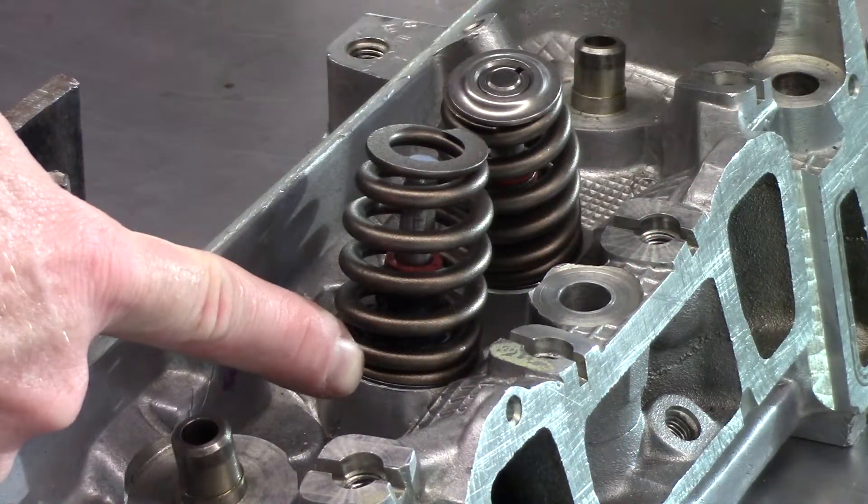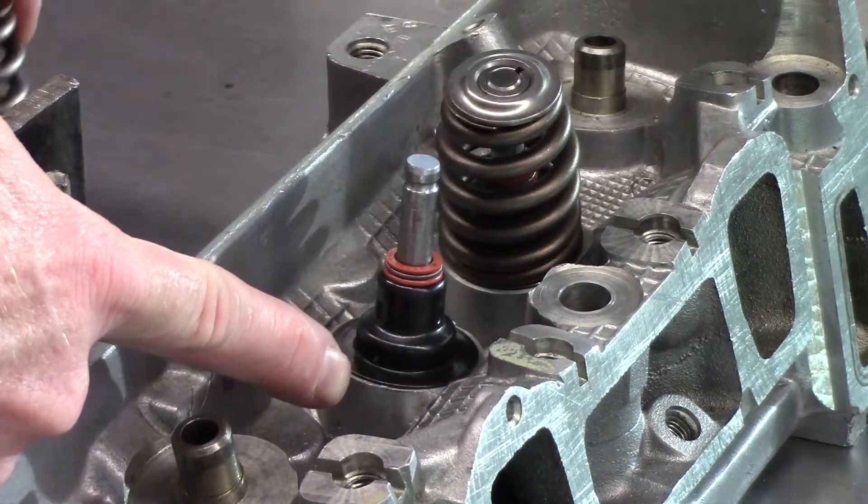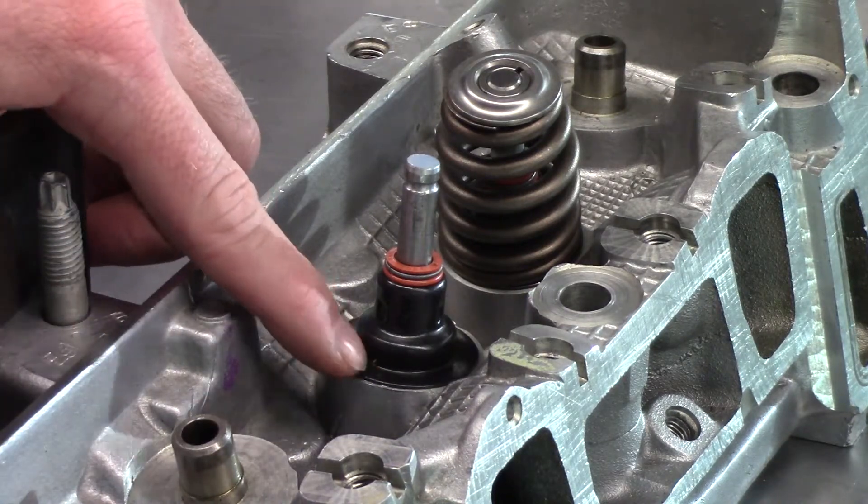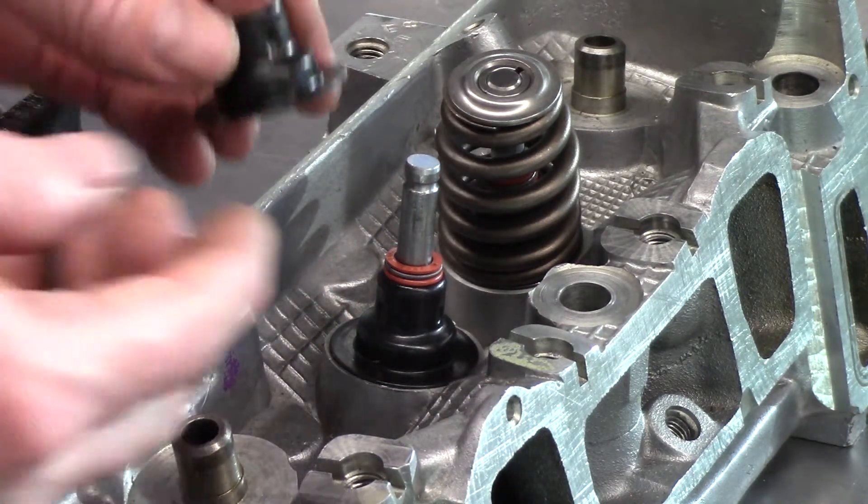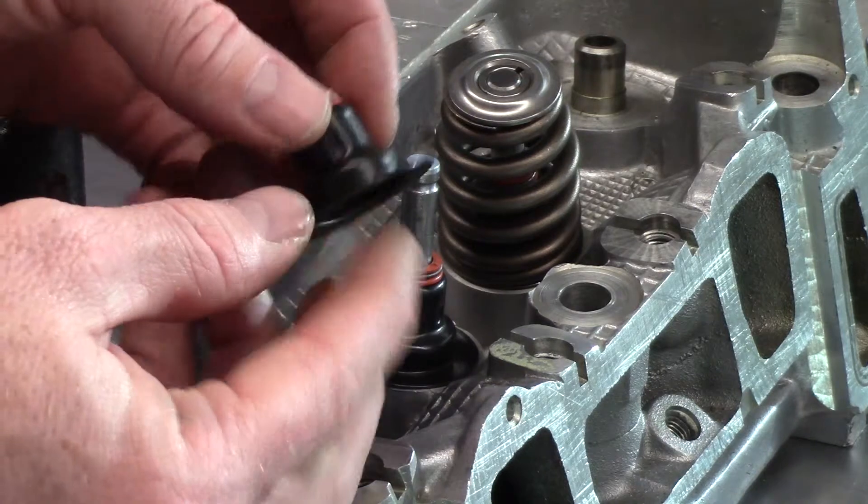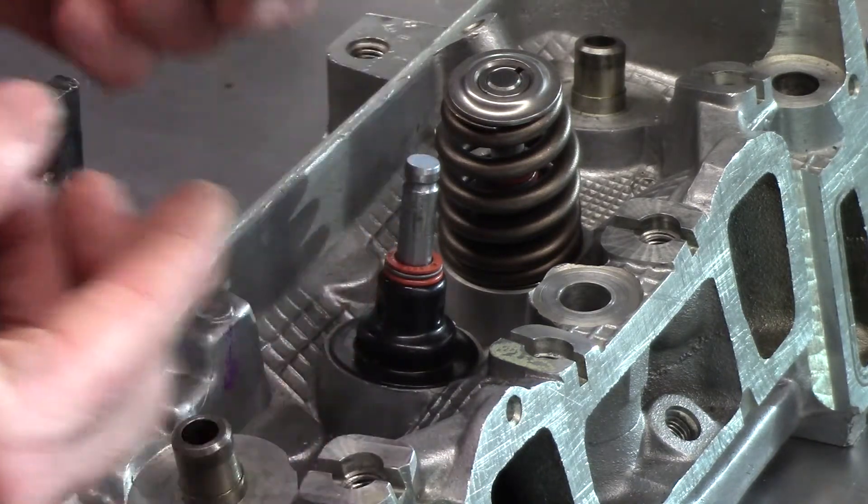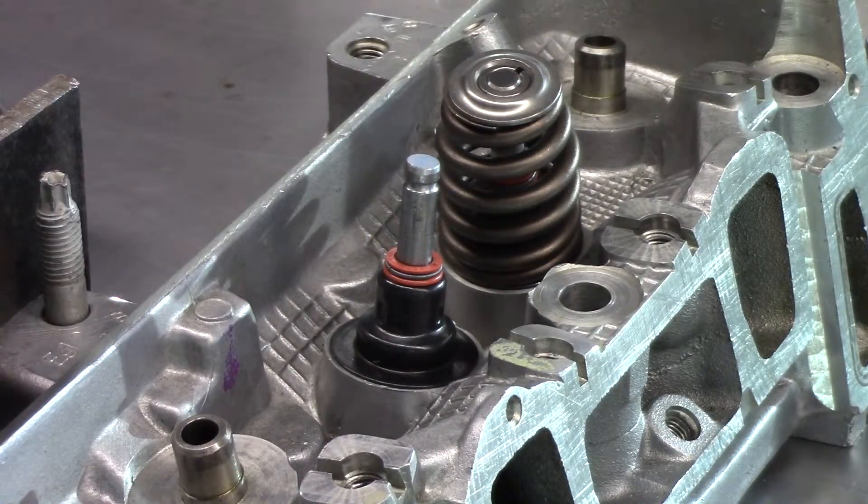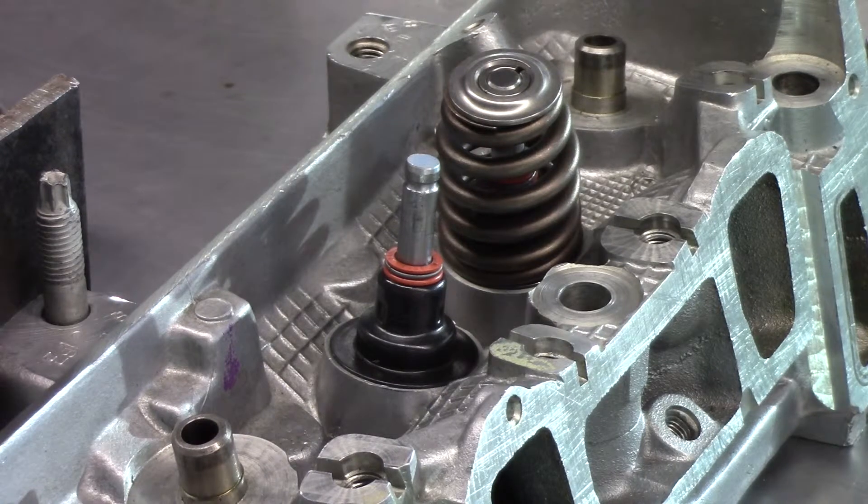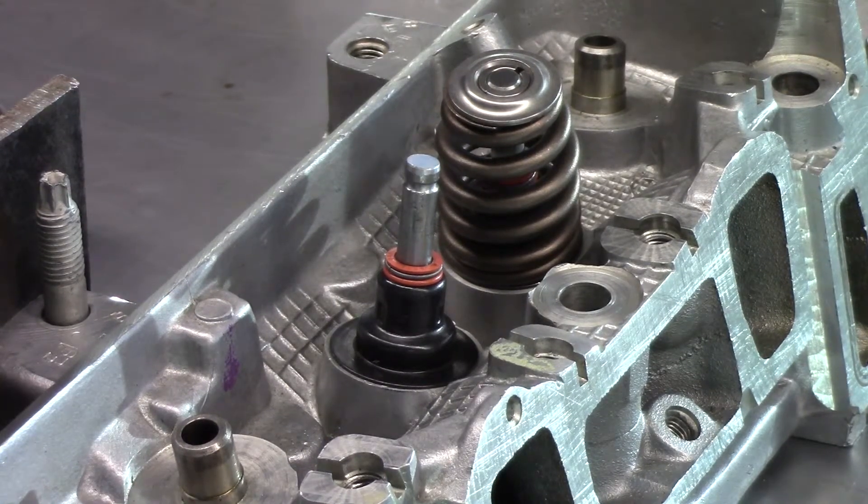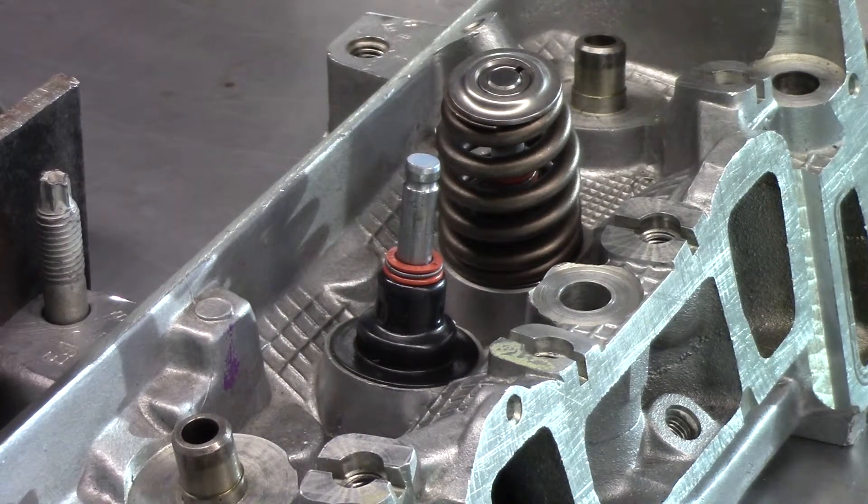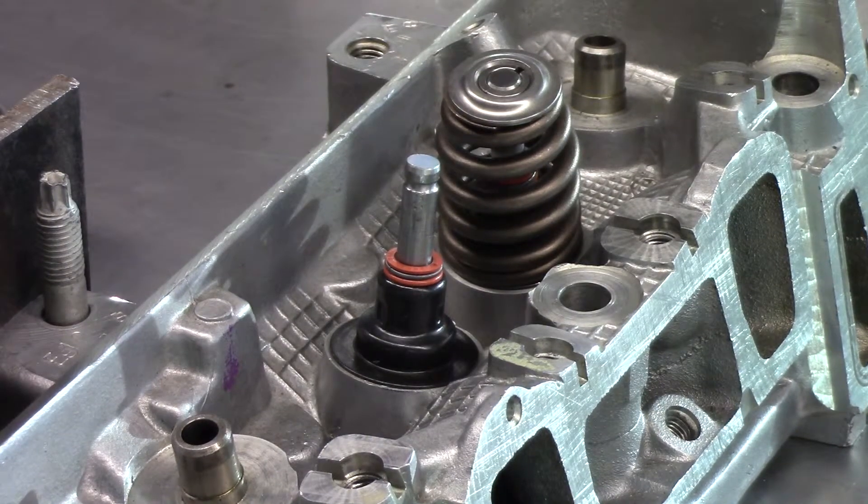Some cylinder heads may have a metal shim installed between the valve spring and the valve spring seat. This shim protects the softer aluminum material of the cylinder head from the steel of the valve spring. Confirm with the service information if this shim needs to be present while performing the valve stem installed height measurement.